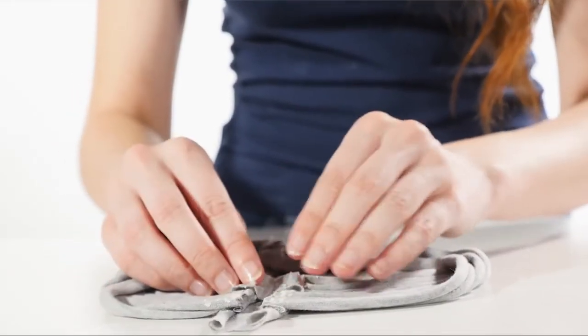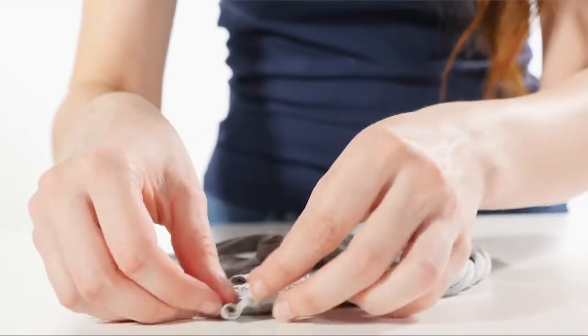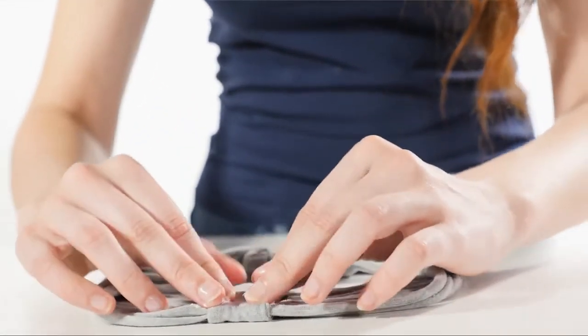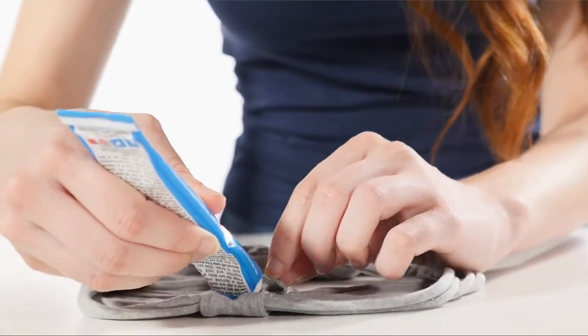Now put a little more glue on top of the ends and fold the fabric over. Trim away the excess fabric as you go and add more glue wherever it's necessary to make the seam more secure.